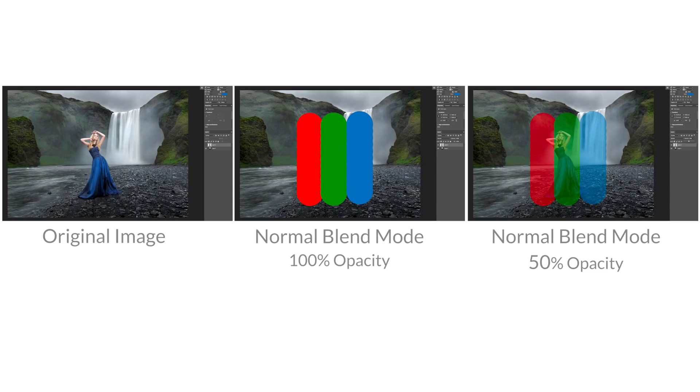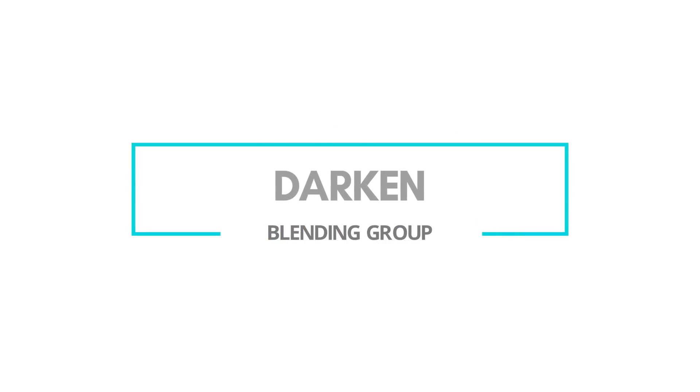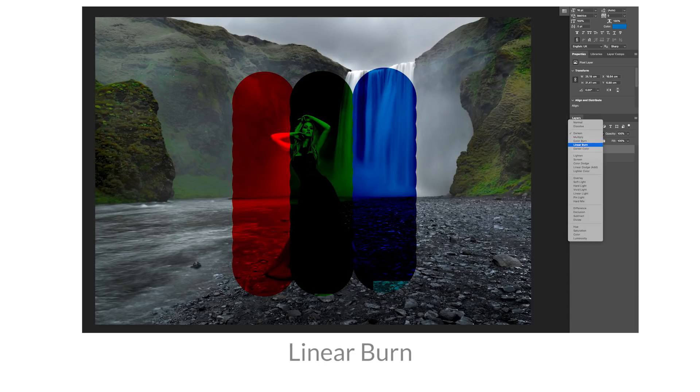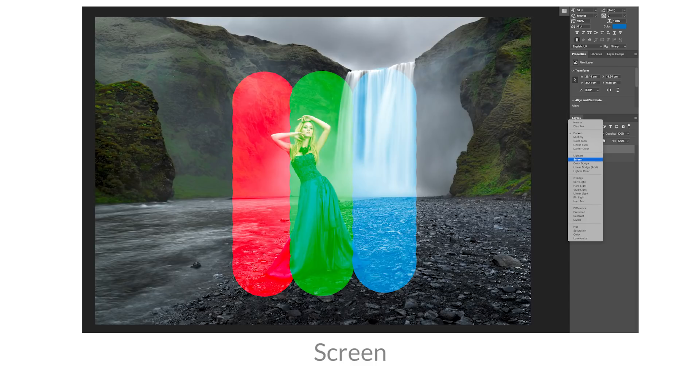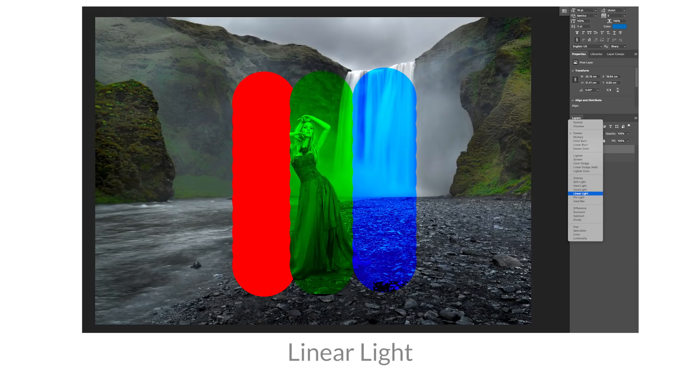The Normal blend group is the default blend mode where only the top layer is visible; its opacity is controlled using the opacity slider, and includes the Normal and Dissolve blend modes. Darken blend modes turn the result colors darker — anything white in the top layer becomes invisible, and darker-than-white areas darken the layer below; this includes Darken, Multiply, Color Burn, Linear Burn, and Darker Color. The Lighten blend group — including Lighten, Screen, Color Dodge, Linear Dodge, Add, and Lighter Color — does the opposite, turning result colors brighter. The Contrast group is a mix between darken and lighten, creating contrast by both lightening and darkening result colors using complementary blend modes.